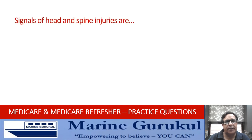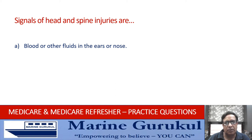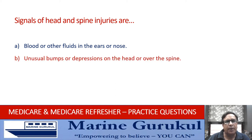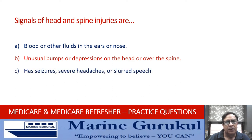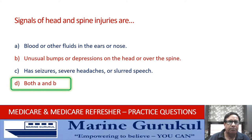Signals of head and spine injuries are: blood or other fluids in ears or nose; unusual bumps or depressions on the head or over the spine; seizures, severe headaches, or slurred speech; or both A and B. The answer is both A and B — blood or fluids in ears or nose and unusual bumps or depressions on the head or spine are all indicators of head or spine injuries.